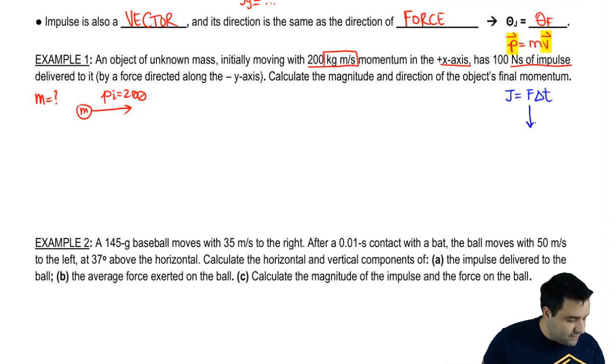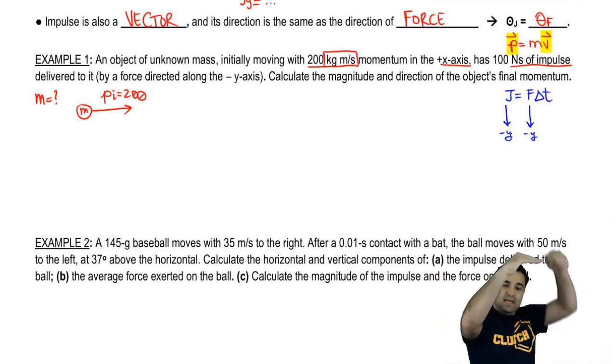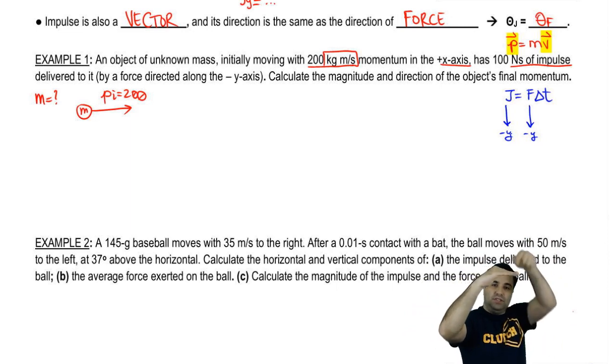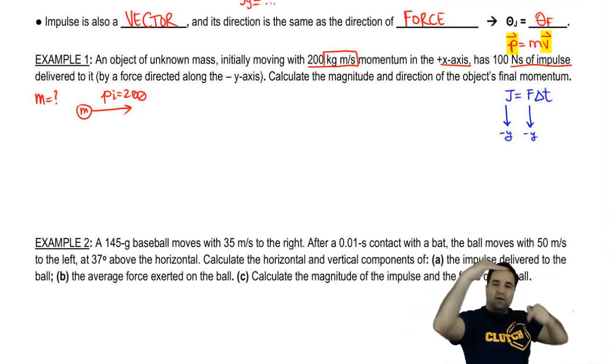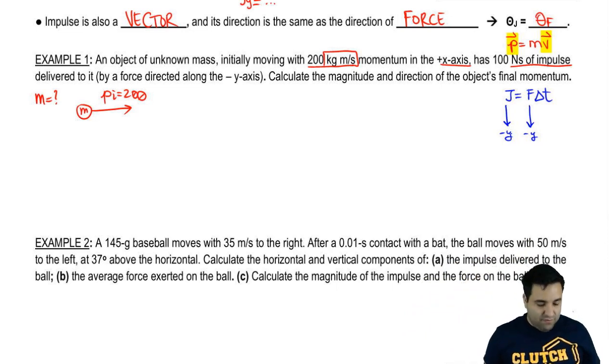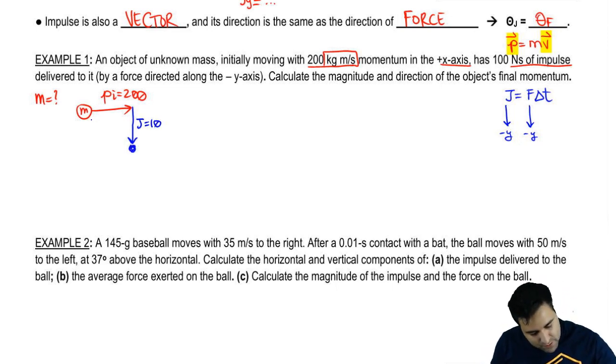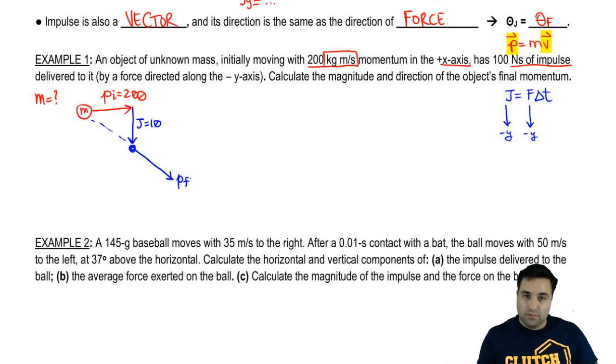J equals Ft. If the force is in the negative y-axis, this means that the impulse will be in the negative y-axis. You're going like this, and then a force pushes you down. You still keep moving that way, but now you're going to face down a little bit. If you're moving this way, then there's a J here of 100, and you now end up going sort of this way. This is going to be your P final.